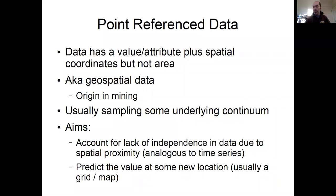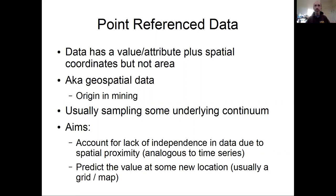In this second video on spatial data analysis, I'm going to talk about our second class of spatial data, which is point reference data. This is where data has some value, attribute, or covariate associated with it in addition to the spatial coordinates. We're not considering these points as having area — the attribute is associated with a specific finite location, not an integral over some area, so it's not like population data.